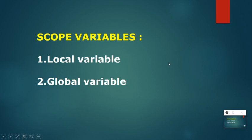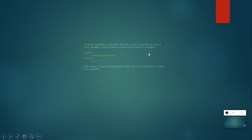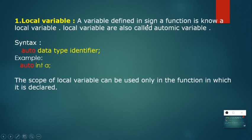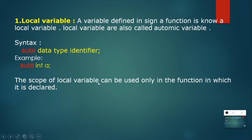Coming to the scope of a variable, there are two types: local variable and global variable. A variable defined inside a function is known as a local variable. Local variables are also called automatic variables. You can see in the syntax I have specified 'auto' — it's not mandatory to write auto, but you can write it for a local variable. The syntax is: auto, space, data type, space, identifier. For example, 'auto int a'. If you don't mention auto, by default it will be taken as a local variable.